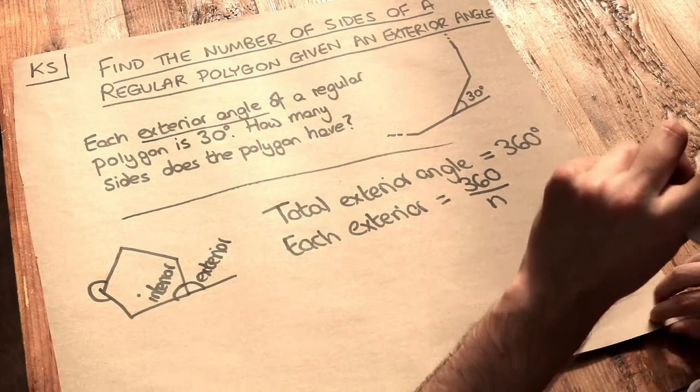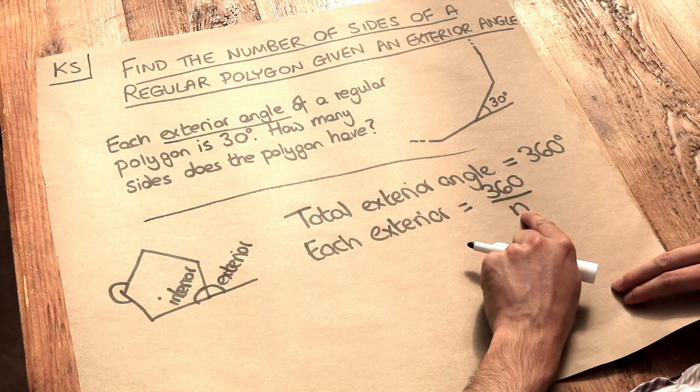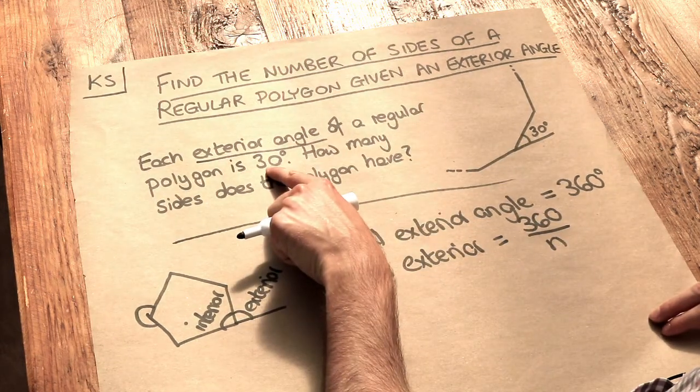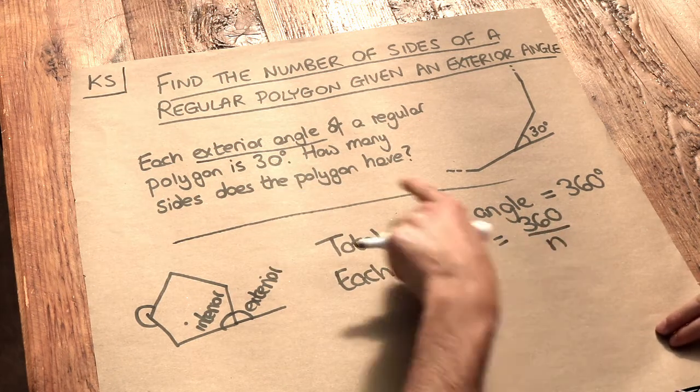So we've got to think backwards here. When we do 360 divided by the number of sides of the polygon, that gave us an exterior angle of 30 degrees. So 360 divided by the number of sides is 30.